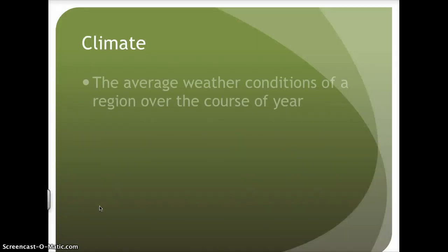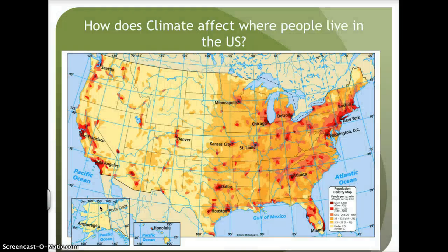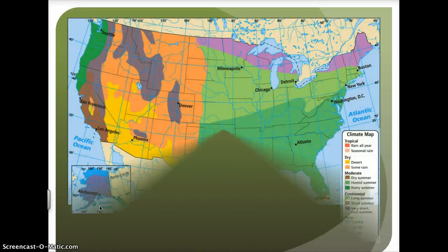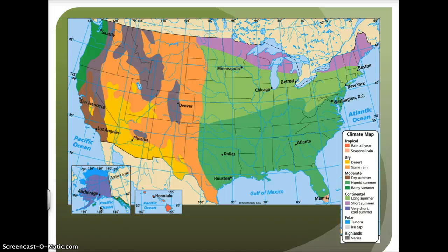Let's take a look at climate. Climate is the average weather conditions of a region over the course of a year. So how does climate affect where people live? Very few people live in the western part of the United States, and there is a high concentration of people living in the southeastern region. Looking at a climate map, where the Rocky Mountains lie and where very few people live, there is a continental climate with a very short, cool summer. In the southeastern region, where there is a high concentration of people, there is a moderate climate with a rainy summer, as well as a tropical climate along the tip of Florida.